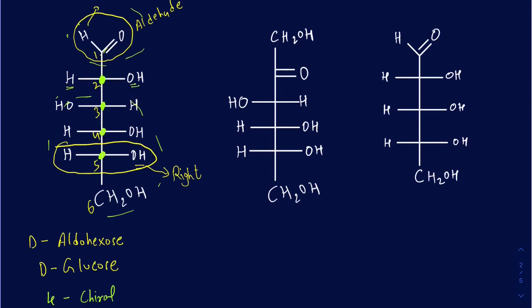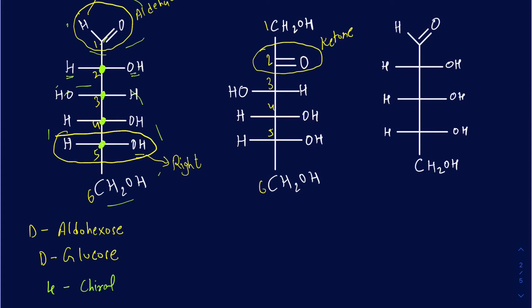Let's talk about the next example. When you count the carbons, it's going to be 1, 2, 3, 4, 5, and 6. Does it have a ketone or an aldehyde? It seems like we have a carbonyl on the second position. Remember, your aldehyde cannot be anywhere but on the terminal carbons. Since you have a carbonyl in the second position, that's going to be your ketone functional group. And since there are six carbons, it's going to be a hexose. But since it has a ketone functional group, it's going to be called a ketohexose.